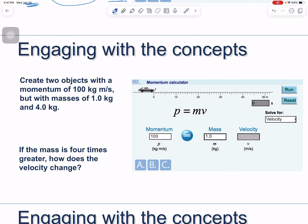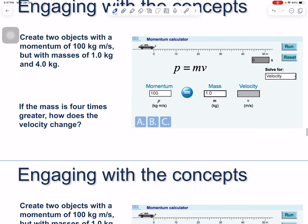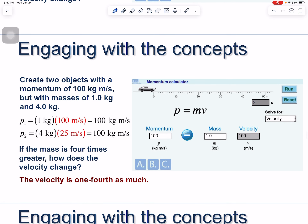Create two objects each with a momentum of 100 kilogram meters per second, but with masses of 1 kilogram and 4 kilograms. For the 1-kg object: 1 × 100 = 100 kg·m/s, so v = 100 m/s. For the 4-kg object: 4 × 25 = 100 kg·m/s, so v = 25 m/s. When mass is 4 times greater, velocity is one-fourth as large — a linear inverse relationship.